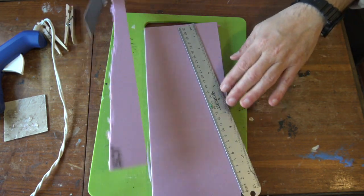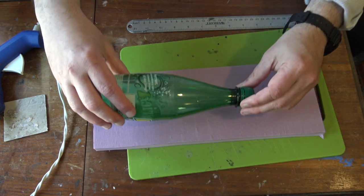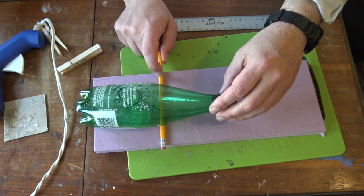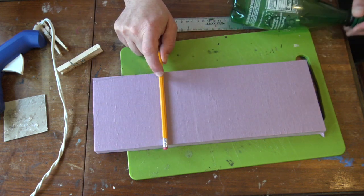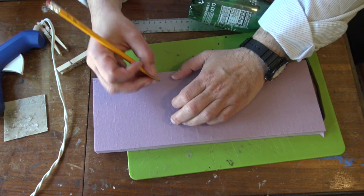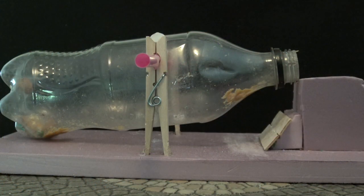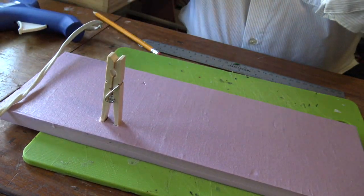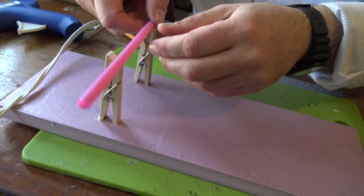I balance the bottle on the pencil to see where to cut the holes and where to place my clothespins. You want the holes to be slightly toward the opening of the bottle, so it'll make the back end heavier so it tilts backwards. I secure the clothespins into the foam with hot glue. You want them to be just slightly wider than the bottle itself.